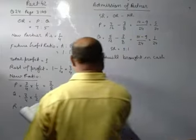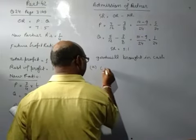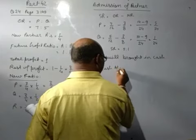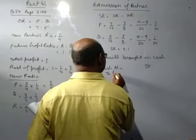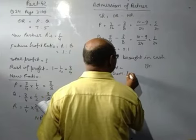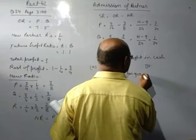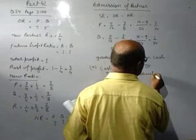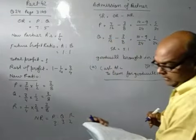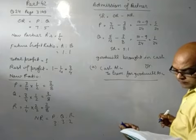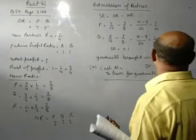Now you will pass two entries. First, cash account debit to premium for goodwill account. And amount of goodwill is given here, 30,000, so you will record 30,000.